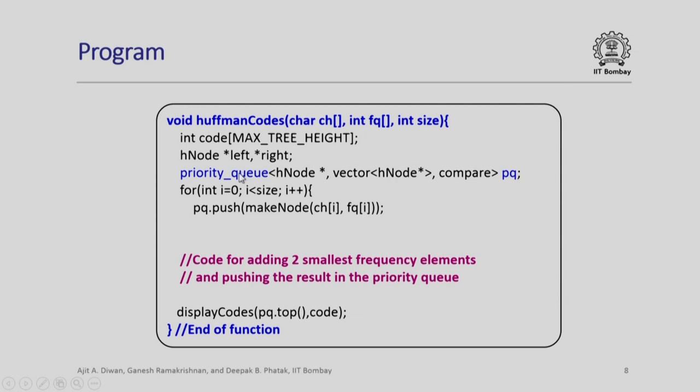This priority queue has a template in which we define H node. There is a vector H node and the compare function which defines the order for insertion into the priority queue. We will arbitrarily name our object as PQ which is stands for priority queue.